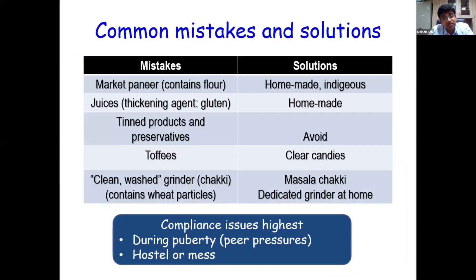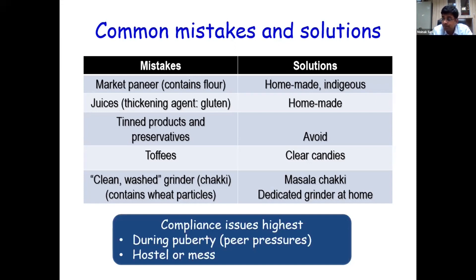Common mistakes: market paneer is not allowed as it contains flour and suji — make homemade paneer. Commercial juices with thickening agents contain gluten, so juices must be homemade. Tinned products and preservatives must be stopped. Toffees are not allowed, but clear candies like mango bite are fine. A dedicated home grinder must be used — commercial grinders, even if washed, still contain wheat particles. Compliance worsens during puberty due to peer pressure, and becomes a huge challenge when children go to hostels.